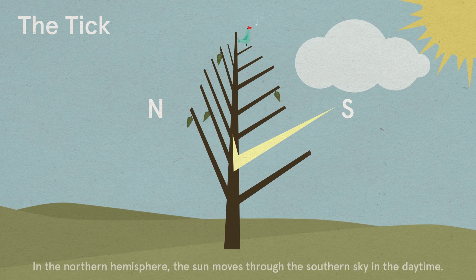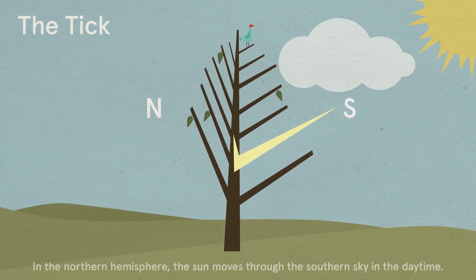If we use the direction of the tick as a compass point, it's most likely to be pointing south.